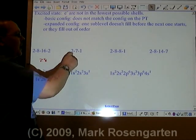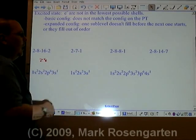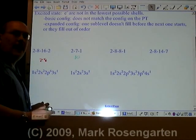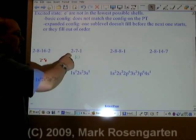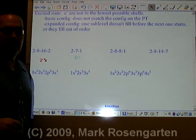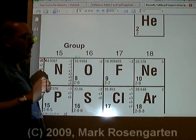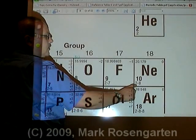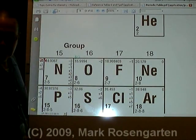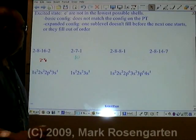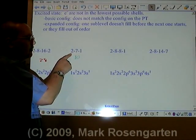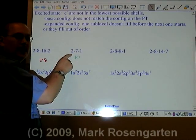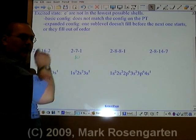Next, we have 2 plus 7 plus 1, which adds up to 10. So we need to look up element 10 and see if it matches that configuration. Element 10 is neon. Its ground state configuration is 2-8. This does not match the configuration we are given. Therefore, this represents the excited state for that element.